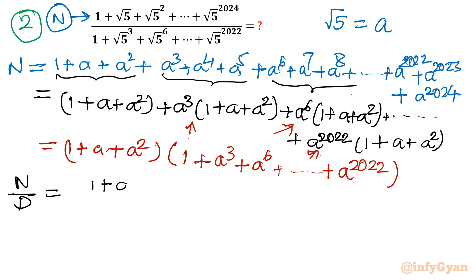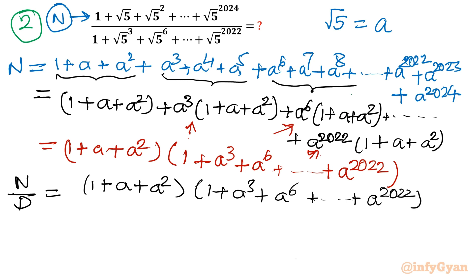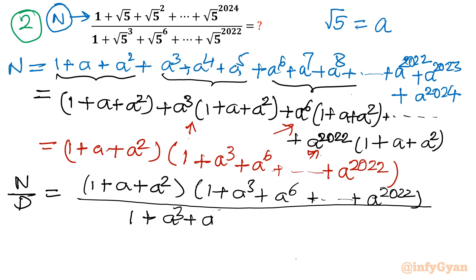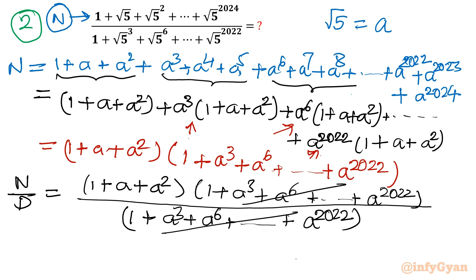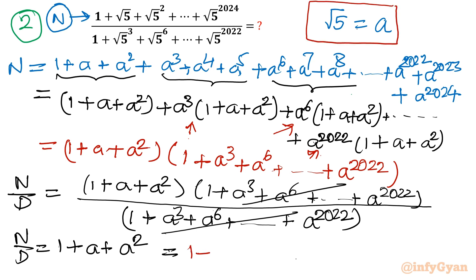So I can write n/d as: [(1 + a + a²) × (1 + a³ + a⁶ + ... + a²⁰²²)] / [(1 + a + a²) × (1 + a³ + a⁶ + ... + a²⁰²²)]. Now cancel this complete bracket from numerator and denominator. So the answer in terms of a is (1 + a + a²). Since we assumed a = √5, we can write: 1 + √5 + (√5)² = 1 + √5 + 5 = 6 + √5.